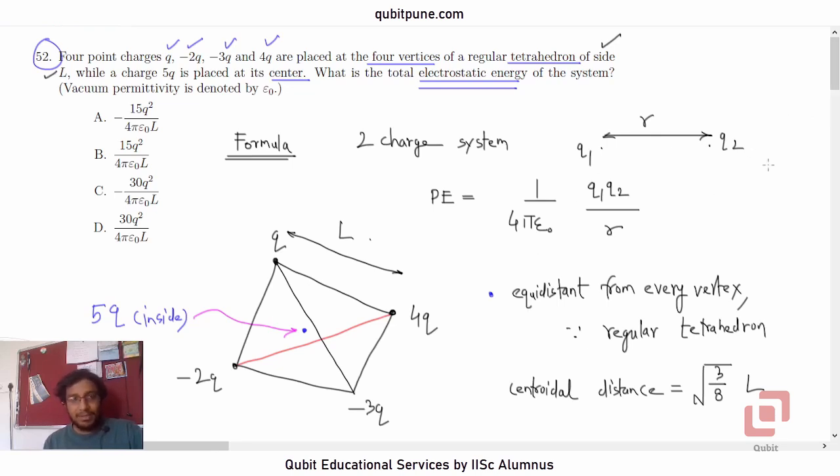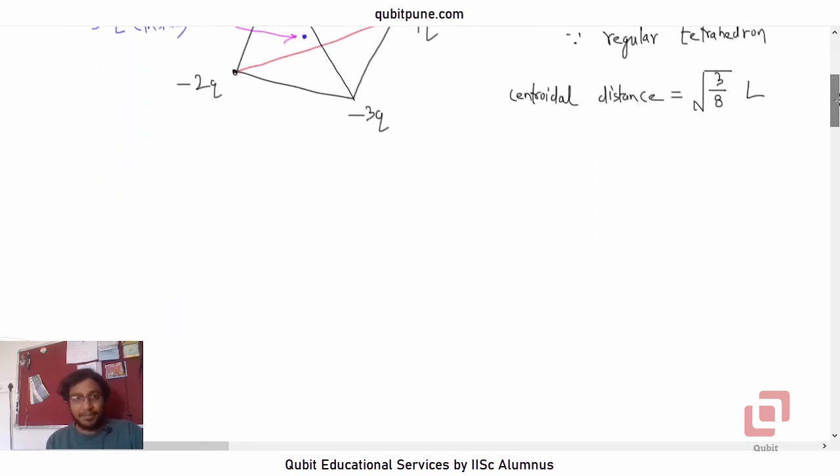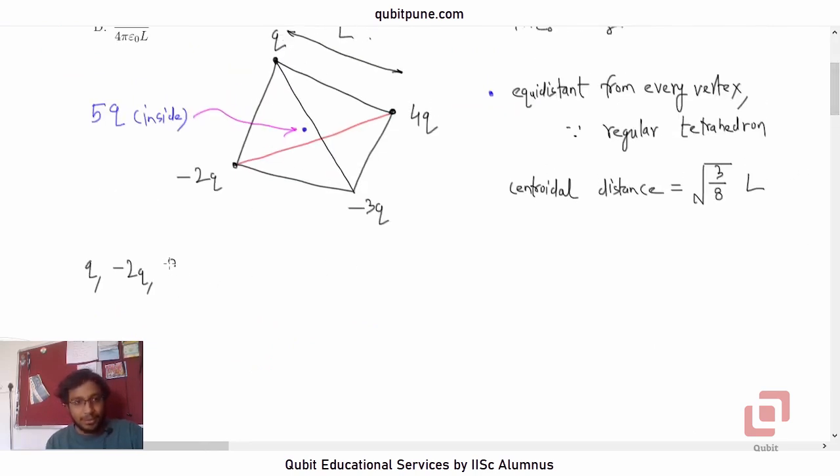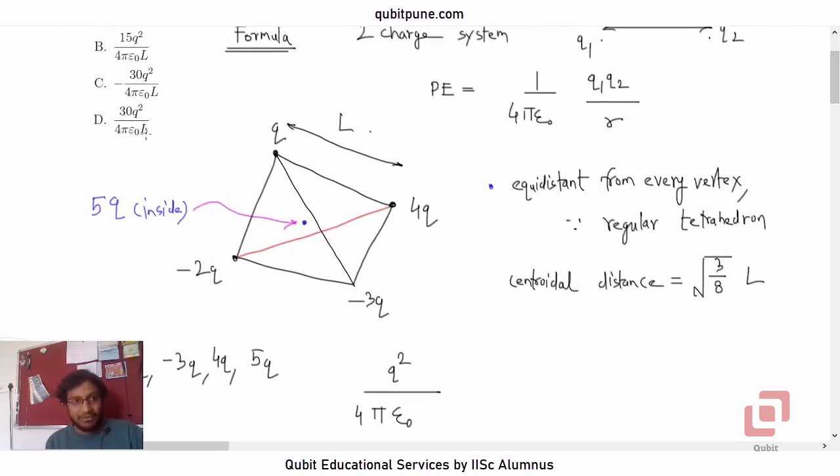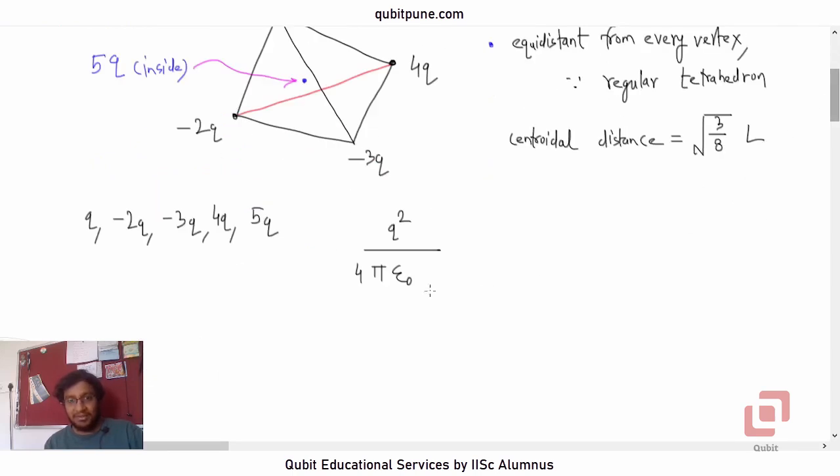Let me also write down the charges again, so that I will not be required to scroll. Q negative 2Q, negative 3Q, 4Q and 5Q. So, let us now consider the pairs. First of all, let us consider the vertices as pairs. We can also write Q squared outside and in the denominator four pi epsilon naught L because we know these numbers are not going to matter much.